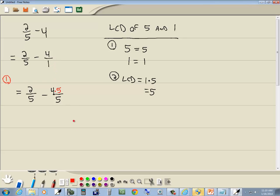What did you multiply times 1 that gave you 5? You multiplied by 5. So we have to multiply the top part by 5 as well. Whatever you multiply the bottom by, you multiply the top by. So we got 2/5 minus 4 times 5, which is 20 over 5.